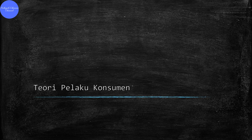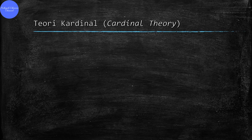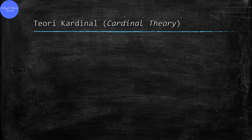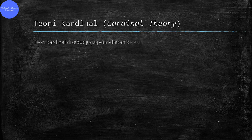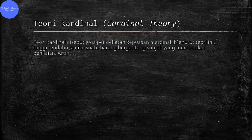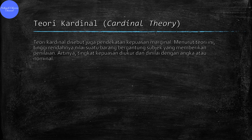D, Teori Perilaku Konsumen. Teori Perilaku Konsumen menganalisis perilaku konsumen dalam mengkonsumsi barang dan atau jasa. Perilaku konsumen adalah aktivitas yang berkaitan dengan kegiatan konsumsi barang dan atau jasa. Perilaku konsumen terbagi atas: Yang pertama, Teori Kardinal. Teori Kardinal disebut dengan pendekatan kepuasan marginal. Menurut teori ini, tinggi rendahnya nilai suatu barang tergantung pada subjek yang memberikan penilaian. Artinya, tingkat kepuasan diukur dan dinilai dengan angka atau nominal.